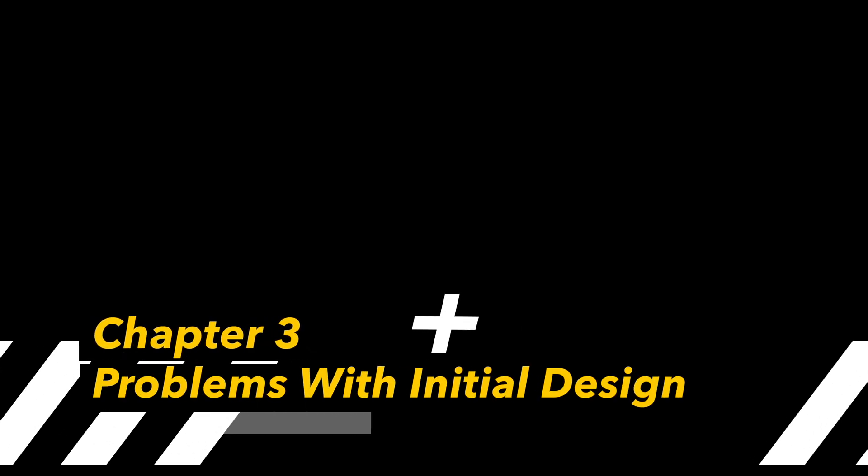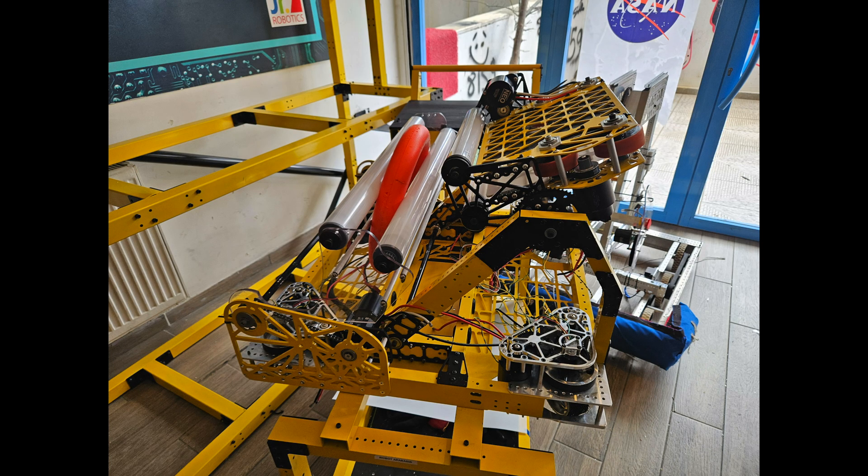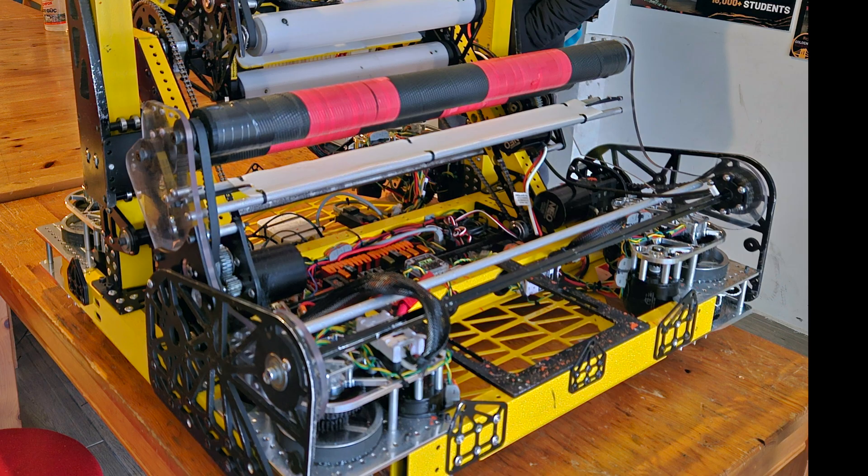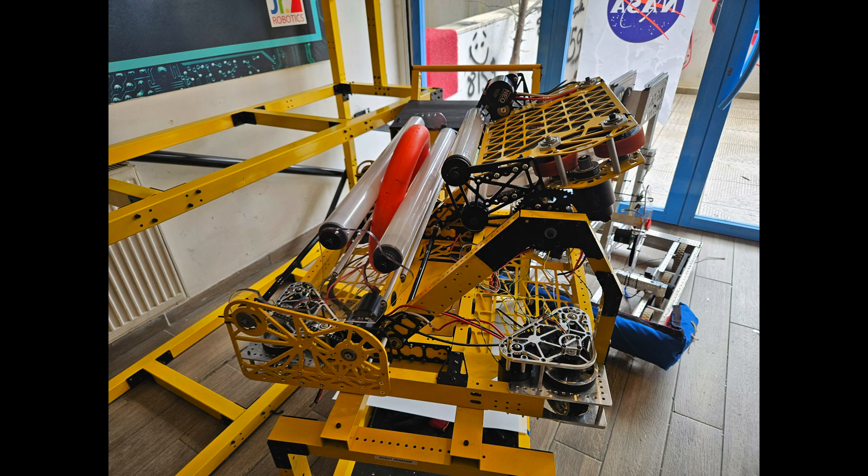Little did we know that this would be anything but a smooth process. By the time construction was fully completed, it was already around the second week of February. However, the intake had a major flaw rooted deep in its design. While it could pick up a node, it struggled to bend it close to 90 degrees when feeding it to the shooter.